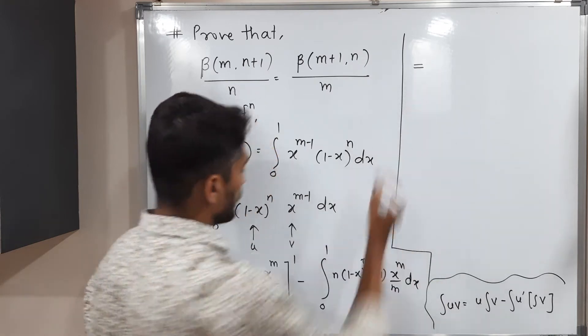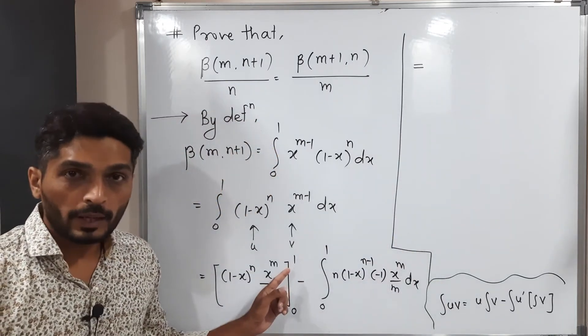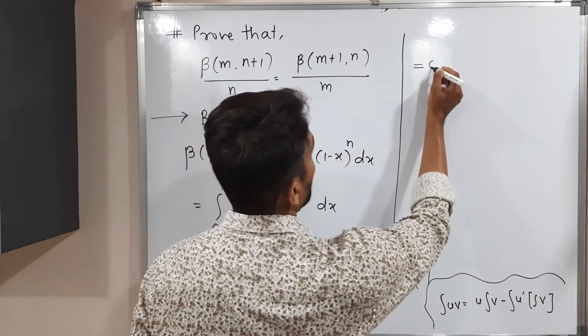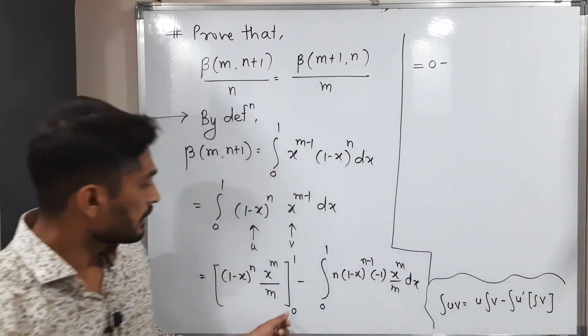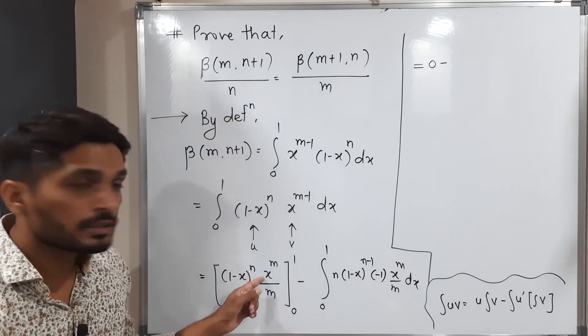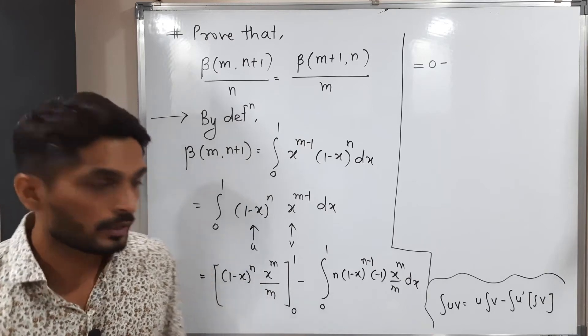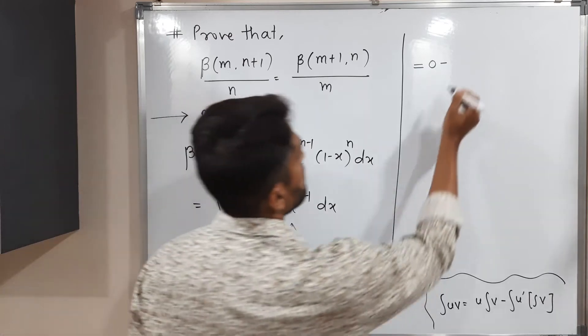Let us simplify it further. So this is equal to, I'm going to put 1 here first. If I put 1 here, 1 minus 1 will get cancelled with each other. We will have 0 minus. Now I'm putting 0. But if I put 0 here, 0 raised to anything is 0 and 0 into anything is again 0. So that means finally we get the value of this bracket is 0.